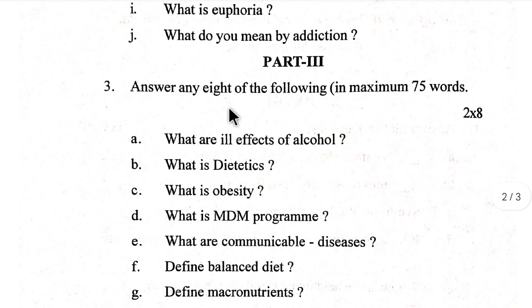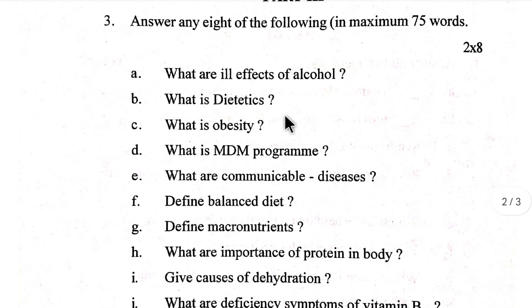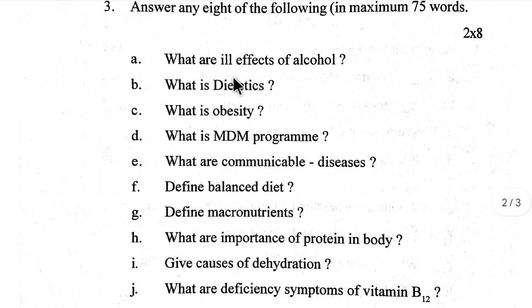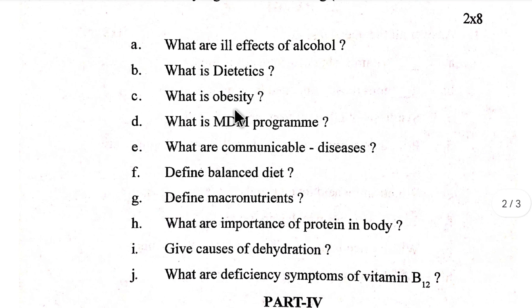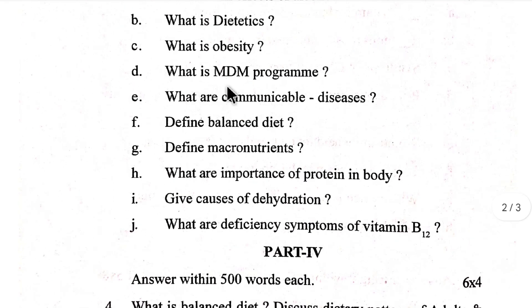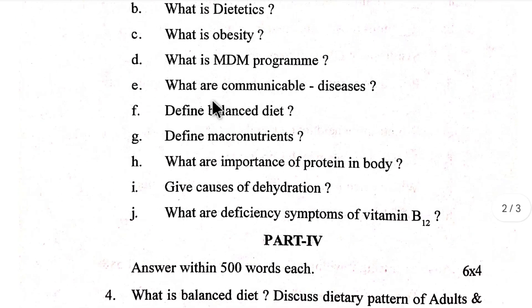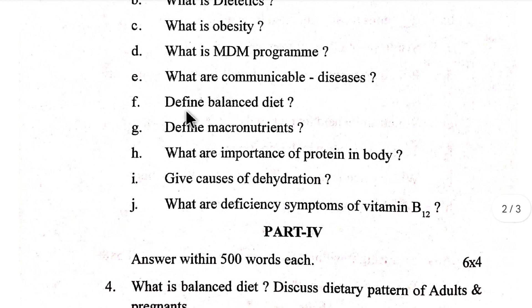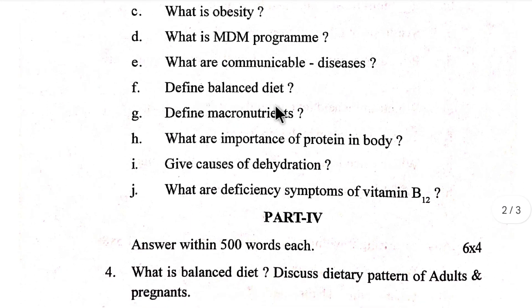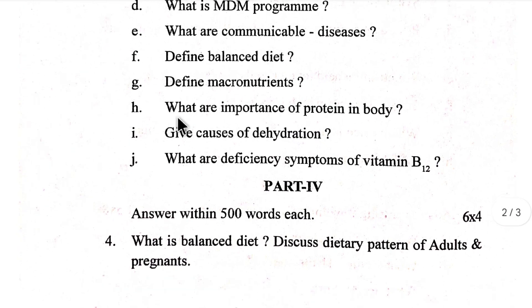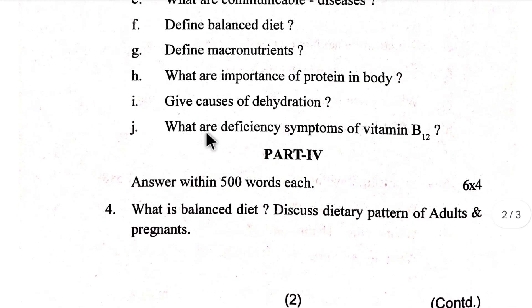Number two: answer any eight within two or three sentences. Number three: answer any eight of the following — what are the ill effects of alcohol? What is dietetics? What is obesity? What is the MDM program? What are communicable diseases? Define balanced diet. Define micronutrients. What are the importance of proteins in the body?